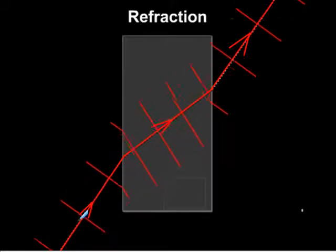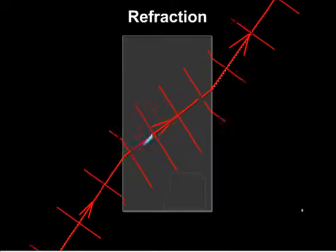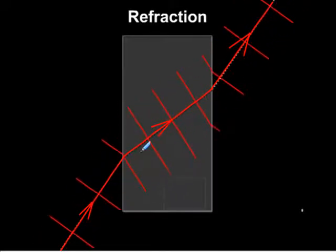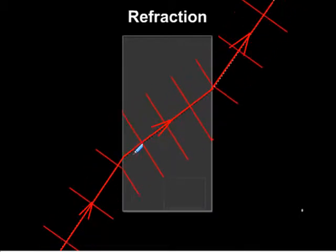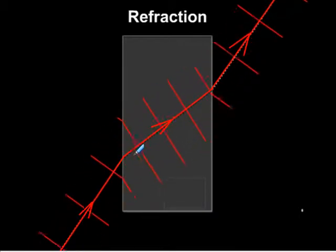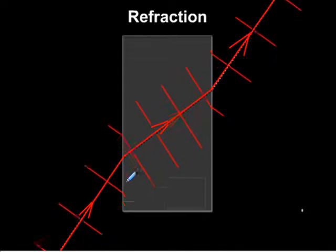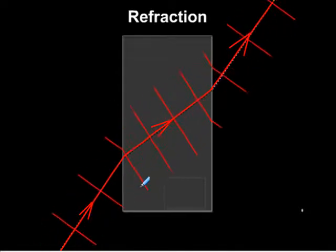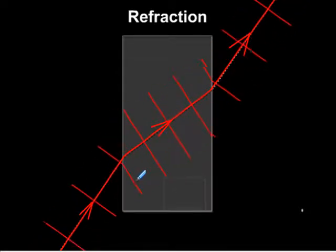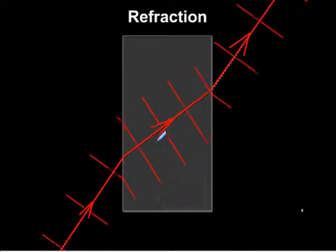Here we can see as a ray of light goes from a rare material into a dense material, it changes direction. This is because as the ray goes into the dense material it slows down. So you can see here as it slows down, only a bit of the ray is inside the block, therefore it has to change direction.